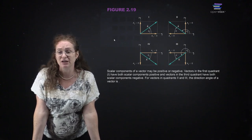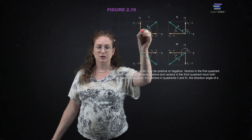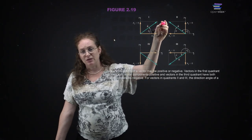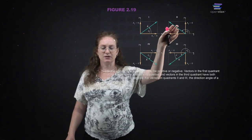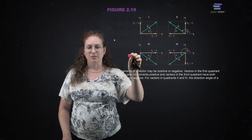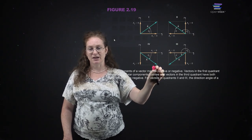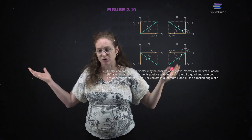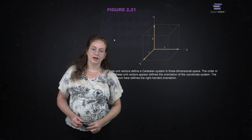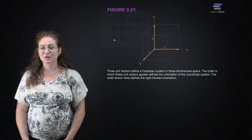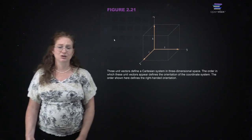The scalar components can either be positive or negative. Depending on if we start the vector at the origin: if both components are positive, you move in the positive direction in both. If x is negative and y is positive, it is in the second quadrant. If x is negative and y is negative, it's in the third quadrant. If x is positive and y is negative, it's in the fourth quadrant.